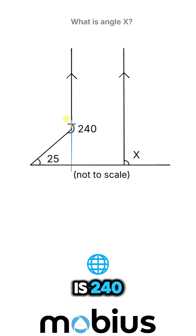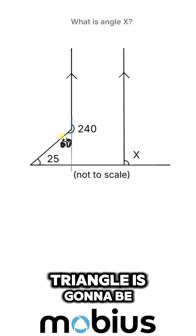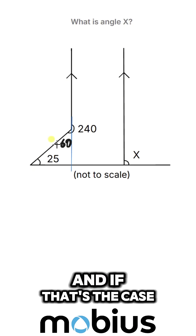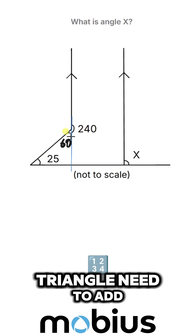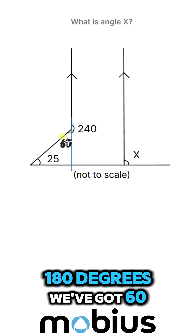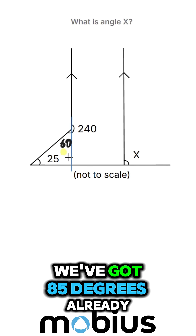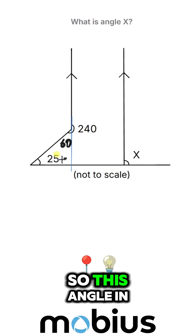That tells us the whole thing is 240 degrees. Part of it is 180, so we know that this inside corner of the triangle is going to be 60 degrees. And if that's the case, our angles in the triangle need to add up to 180 degrees — we've got 60 plus 25, which gives us 85 degrees already.